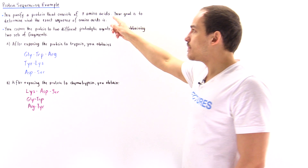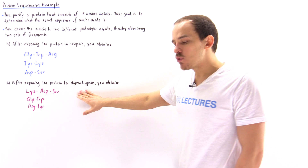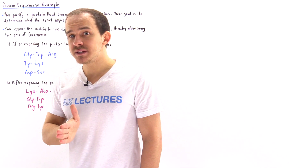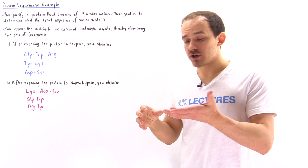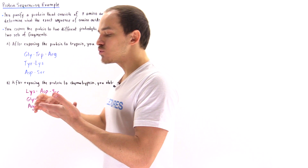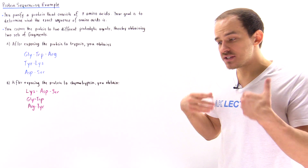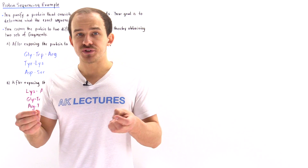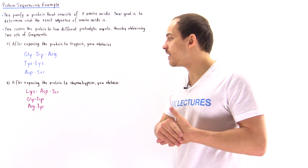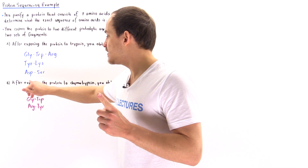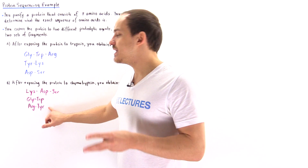You then take the same polypeptide and expose it to a different proteolytic enzyme — chymotrypsin. Chymotrypsin cleaves the peptide at the carboxyl end of bulky aromatic amino acids, for example tyrosine, phenylalanine, and tryptophan, as well as methionine and leucine. You again get three fragments, and after Edman degradation you find fragment one is lysine-aspartate-serine, fragment two is glycine-tryptophan, and fragment three is arginine-tyrosine.